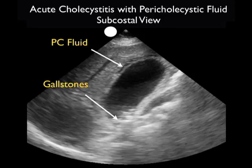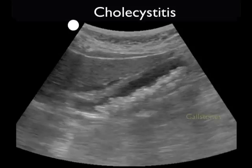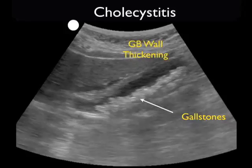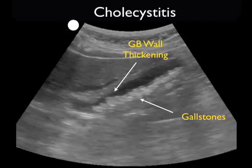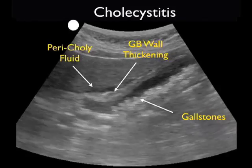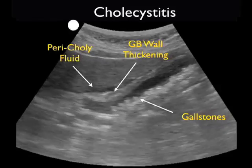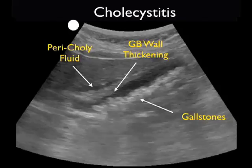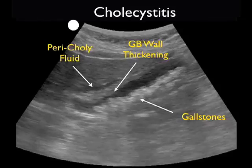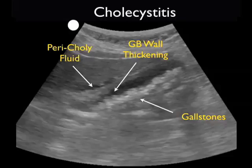So, acute cholecystitis on bedside sonography. Let's wrap this module by looking at this video clip for the multiple signs of acute cholecystitis that are present. First, we notice the distended gallbladder with a significant load of gallstones stretching across the posterior wall of the gallbladder. The patient had a positive sonographic Murphy sign, fulfilling the primary diagnostic signs. Next, let's look at the secondary diagnostic signs: the anterior wall of the gallbladder is thickened and inflamed, and we also see a stripe of pericholecystic fluid just outside the anterior wall of the gallbladder.